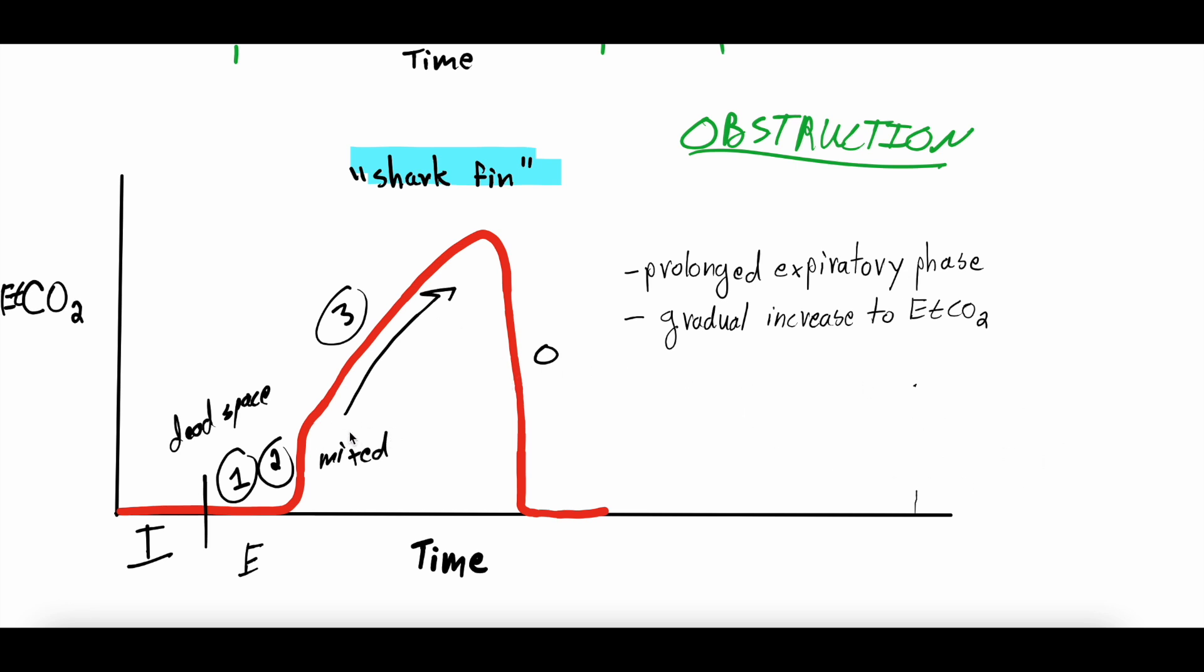So maybe you get some mixing. And then this phase 3, we already said it's the alveolar air. But maybe you get 50% of the lung where that air flows out and mixes for a prolonged period of time. Maybe you get some of the lung that has obstruction, some of the lung that has less obstruction. But this mixing phase of the dead space and the alveolar air is much more pronounced. It's much longer. It's much more gradual until you get to the end-tidal CO2 peak here. So what you often get in obstructive disease is a prolonged expiratory phase and this gradual increase to the end-tidal in phase 3.